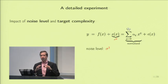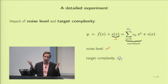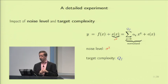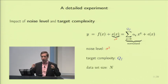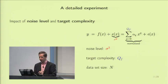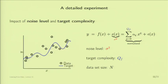So we have three parameters affecting overfitting: the noise level sigma squared, the target complexity Q_F, and the number of data points N. The previous example had Q_F equals 10, noise corresponding to the distance between points and the curve, and N equals 15. We're generating random instances at will to see if the observation of overfitting persists across many runs.